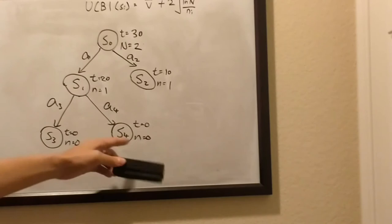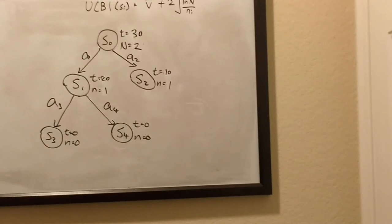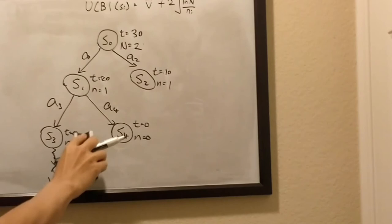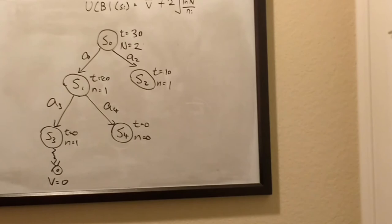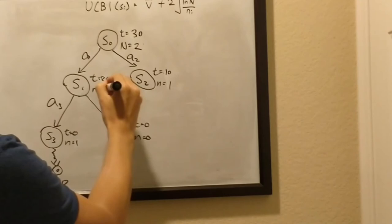So, again, these two have n equals 0, so their value is infinity right now, so we're just going to take sequential order. And, again, we've never been to s3 before at this point, so we're going to do a rollout to a terminal node, and here we find that the value equals 0. So, the value of the t here is 0, and then the n becomes a 1, and then the n here becomes a 2, and then the n here becomes a 3.